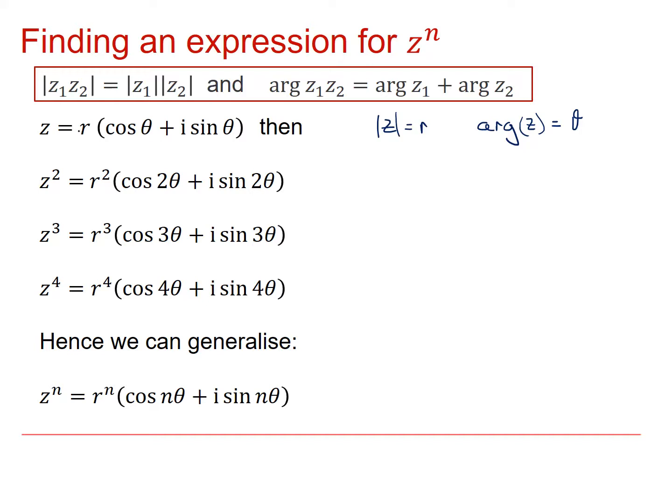If I square it, that means I'm multiplying r cos θ plus i sine θ by itself. So I should get a modulus of r squared and an argument of θ plus θ, which is 2θ. For z cubed, I'm going to get z squared times this, so r cubed and 3θ. And for z to the 4, r to the 4 and 4θ.